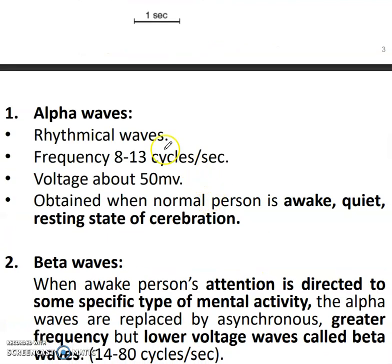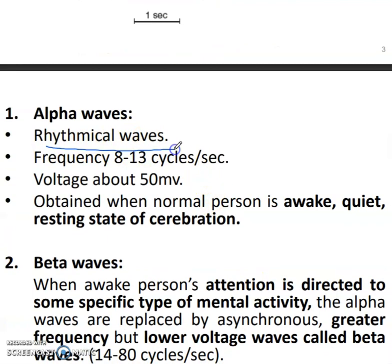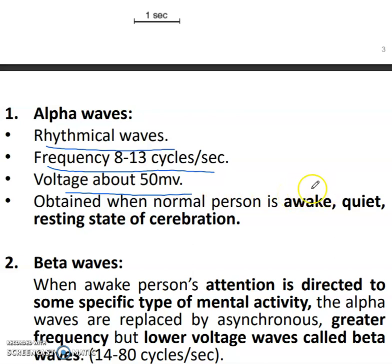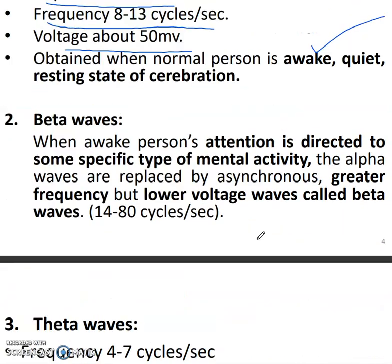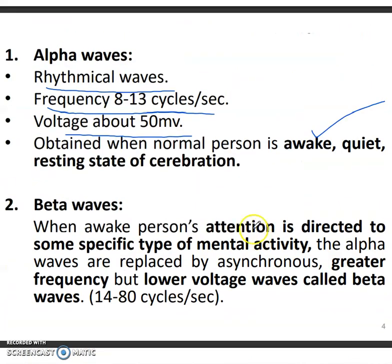Alpha waves are rhythmical waves. Their frequency is 8 to 13 cycles per second and the voltage is about 50 millivolts. They are obtained when the person is awake, quiet, or in a resting state.